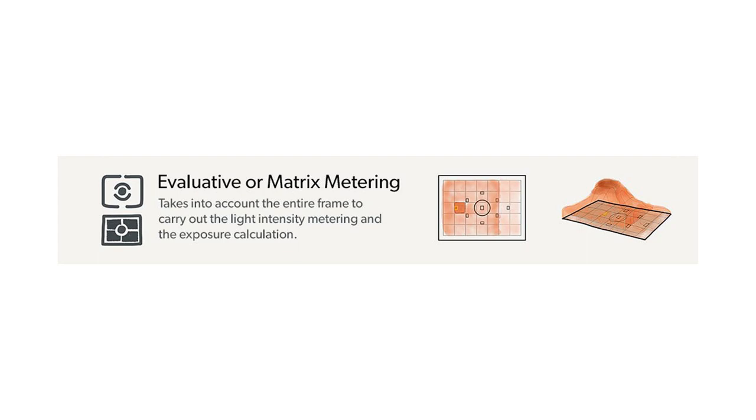The next one is matrix metering, also known as multi-zone metering. What this mode does is divide your image into several different areas and then takes the information from each area to produce an average exposure for your final image. Even though this mode is found on more advanced cameras, it's very similar to the average metering on a point-and-shoot. The difference is that it has a little more technology behind it, so the final image will be slightly better.